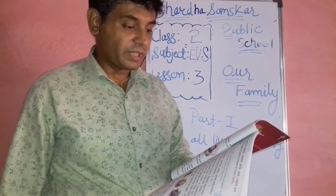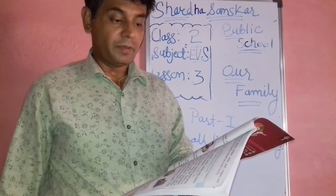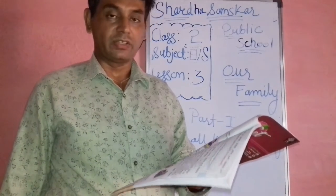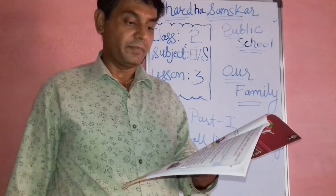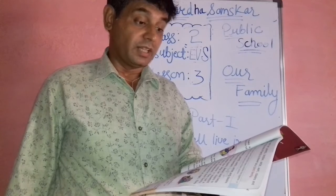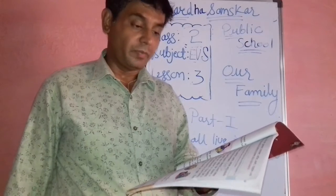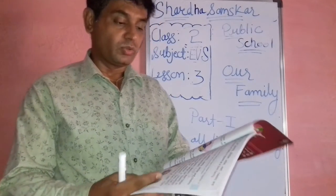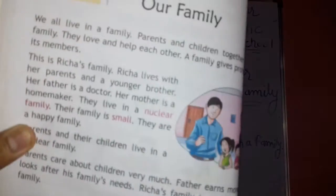Do you know there are some families in which parents and their many children live together? In a joint family, grandparents, parents, uncles, aunts, and cousins all live together. A joint family has many members. So students, we have learned about families here.